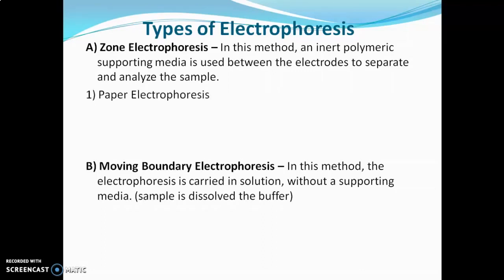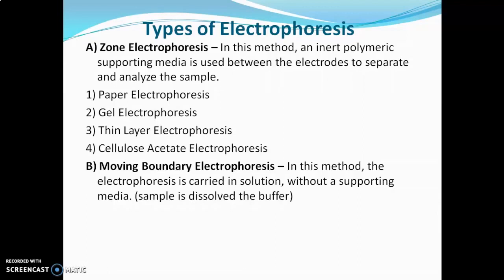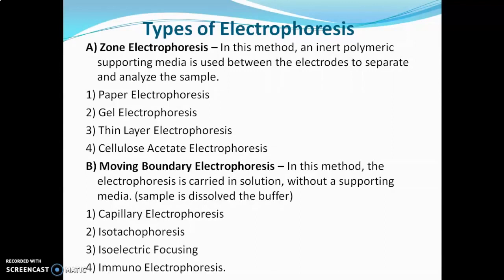Zone electrophoresis has further subtypes. First is paper electrophoresis, where paper is the support medium. Next is gel electrophoresis, where agarose gel, polyacrylamide gel, or starch gel are used as supporting media. Thin layer electrophoresis uses silica or alumina as support medium, and cellulose acetate electrophoresis uses a cellulose acetate membrane. The types of moving boundary electrophoresis include capillary electrophoresis, isotachophoresis, isoelectric focusing, and amino electrophoresis.